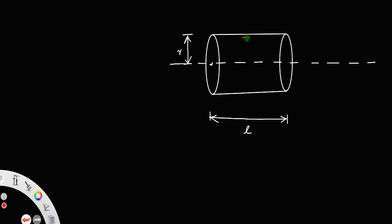At the boundary or at the surface of the container, due to the friction between the flow of the fluid and the container, the velocity at the extreme point is 0. As we move towards the axis, the velocity increases and is maximum at the center or at the axis of the cylinder. At the surface of the container, at the extreme point, the velocity is 0.